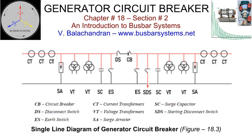A typical generator circuit breaker with associated components that can be installed in each pole is displayed. The generator circuit breaker housing can accommodate current transformers, surge capacitors, disconnect switch, voltage transformers, starting disconnect switch, earth switch, and surge arresters. Any maintenance or replacement of the accessories, if installed in the generator circuit breaker enclosure, will have to be carried out after de-energizing and earthing that section. Many power stations still prefer to have current transformers installed in the run of the isolated phase bus, and voltage transformers with surge arresters and surge capacitors mounted separately in panels.